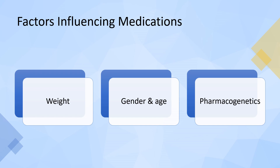Obtaining the patient's current weight before initiating any medications is the responsibility of the nurse. Medications are often prescribed according to the patient's weight in kilograms. A pediatric patient is specifically ordered medication based on their weight in kilograms, and the dosage is smaller due to the individual's metabolism and excretion being affected by organ immaturity.